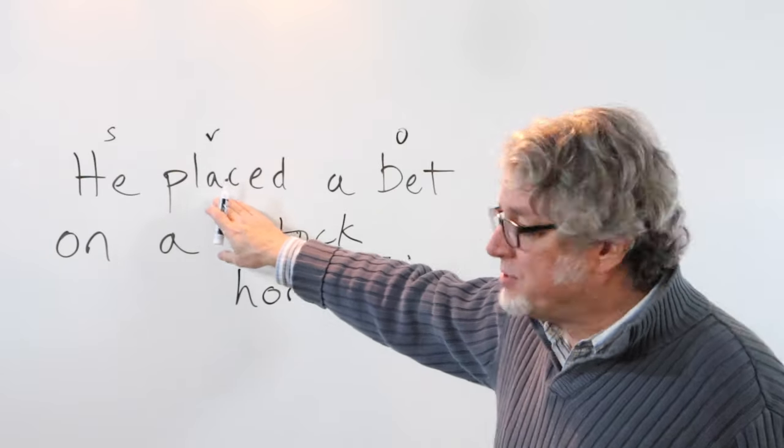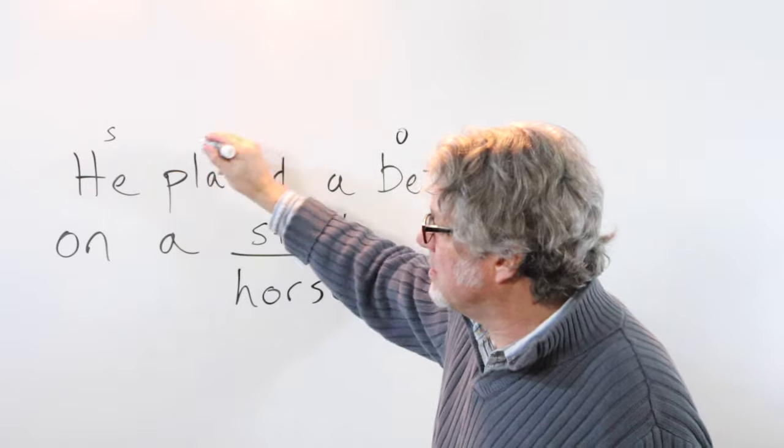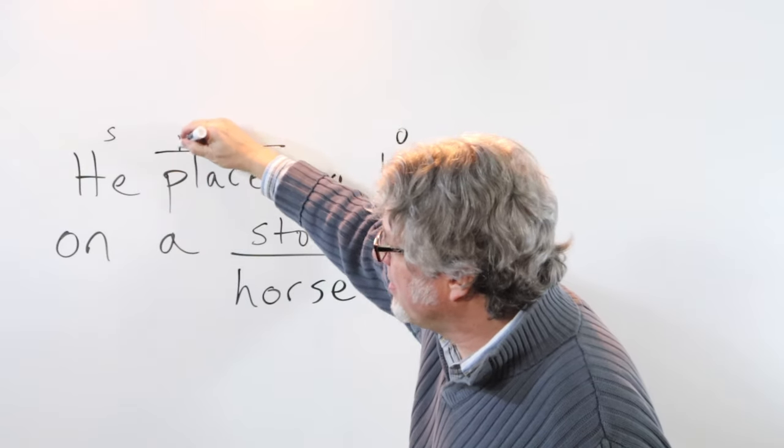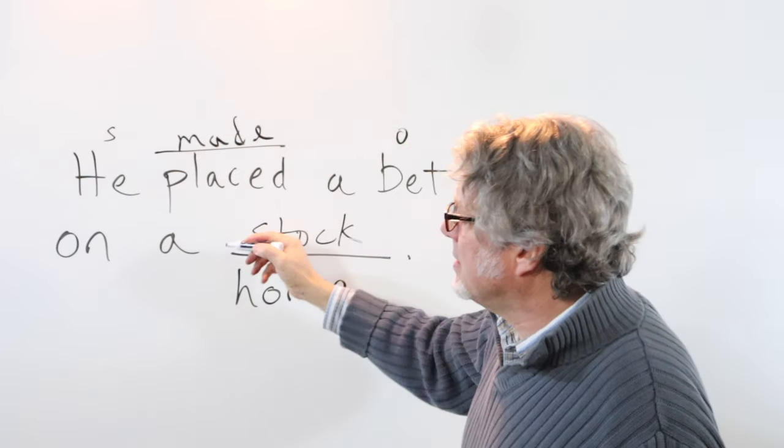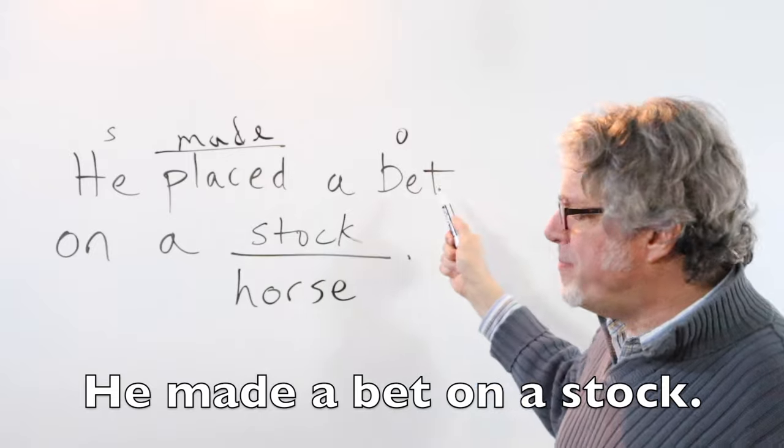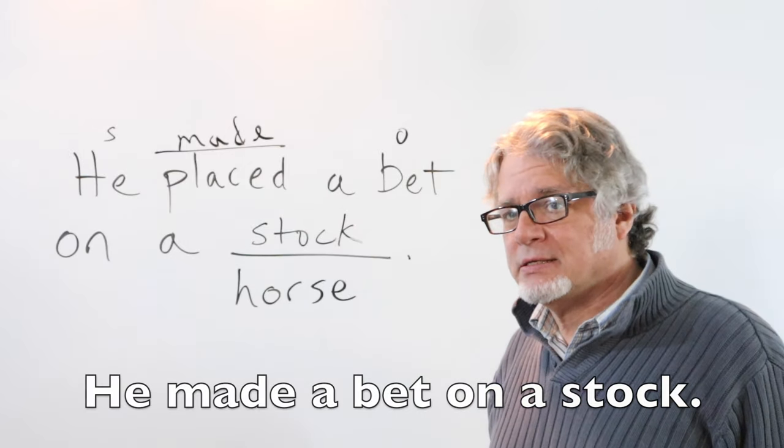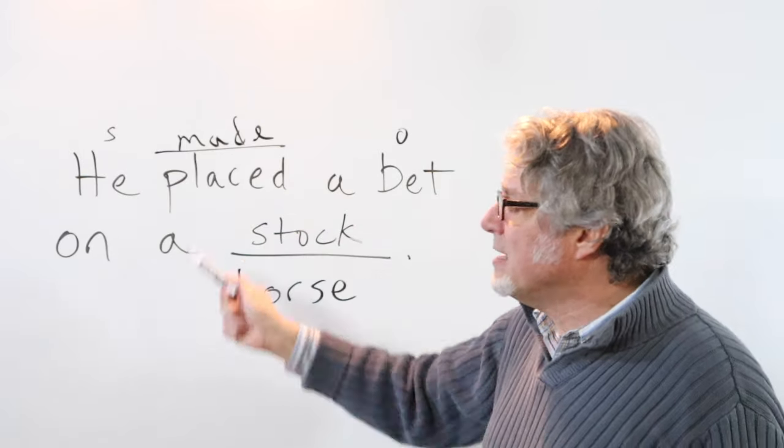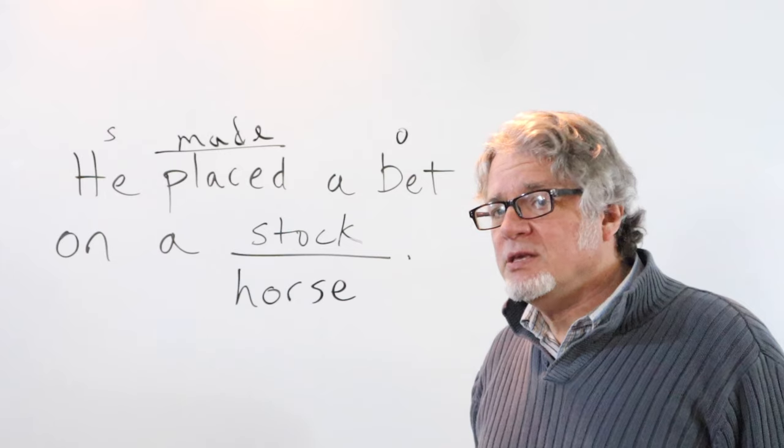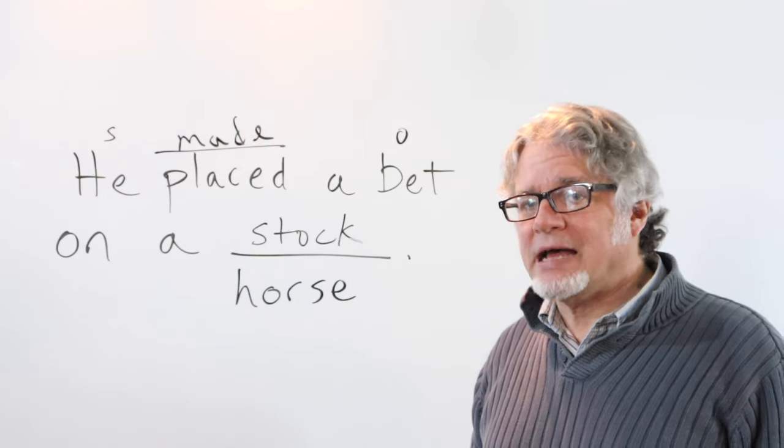The verb placed can also be replaced with made. He made a bet on a stock. It's the same thing as saying placed. He placed a bet on a stock.